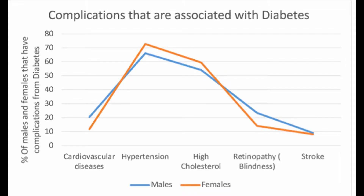This graph demonstrates the complications associated with diabetes as well as the percentage of males and females that have those complications. Common complications of diabetes are cardiovascular disease, hypertension, high cholesterol, blindness, and stroke. The orange line represents females and the blue line represents males. Hypertension had the highest percentages at about 70%. High cholesterol followed with the second highest at 60%. Stroke had the lowest percentage at 10%, and blindness had the second lowest at 11%.